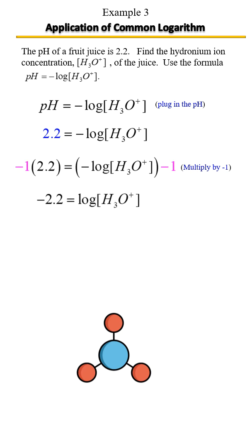And now what we're going to do is rewrite it in exponential form. Recall that a common log has a base of 10. So if we rewrite it in exponential form, moving in that snail-like pattern, it would be starting with the base 10 raised to the negative 2.2 equals the H3O+ concentration.